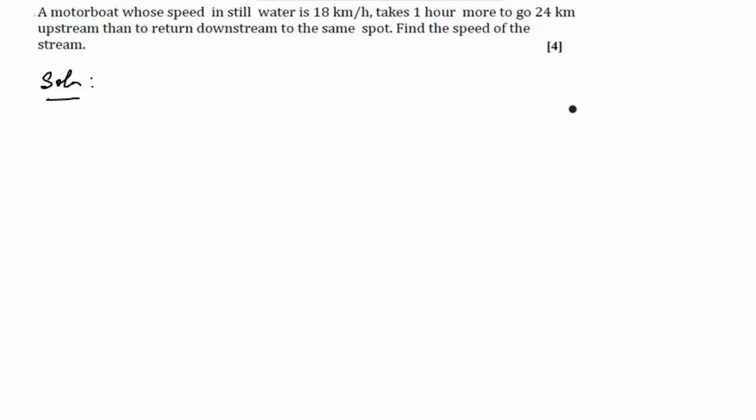A motorboat is going against the current of the flow and flowing with the current. Upstream is against the current and downstream is with the current. Here, the distance is 24 km. The speed of the boat in still water is given as 18 km/h.